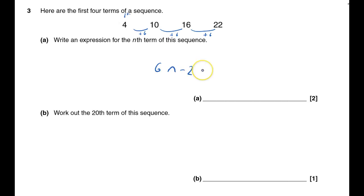It seems to be the nth term, let's just check. Let's do the third term. 6n, so 6 times 3 is 18. Take away 2 is 16. I know I'm right, I've got those two marks.